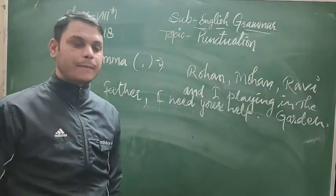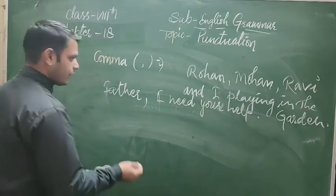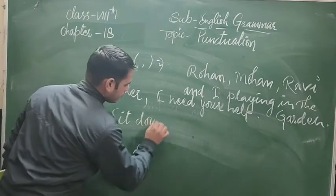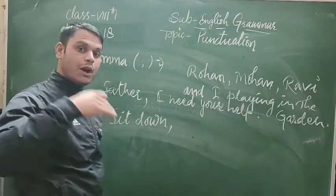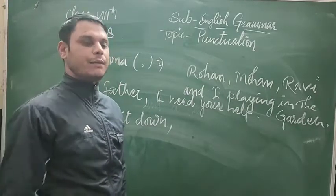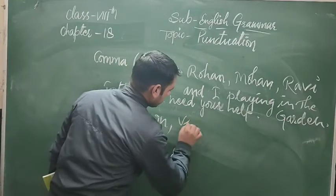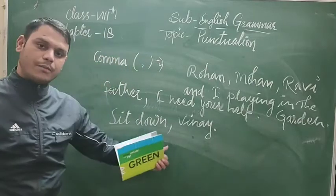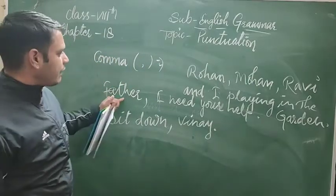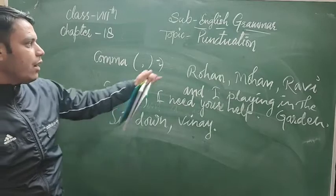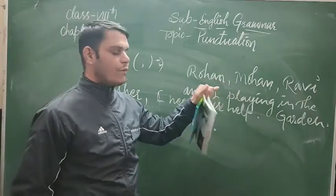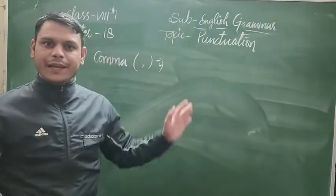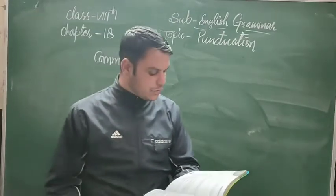Suppose you are giving a command to someone — in commands, how do you use the comma? For example: 'Sit down, Binay.' तो जिसको आपने command दिया है, उसके नाम से पहले comma लगाएंगे। Similarly, in requests, and to separate nouns or words in a sentence, you use the comma. There are many uses of the comma in many places.